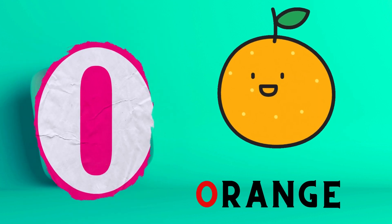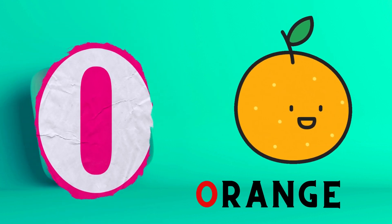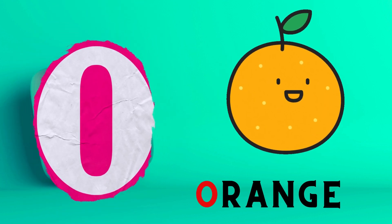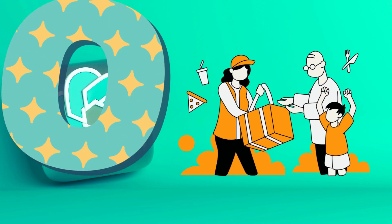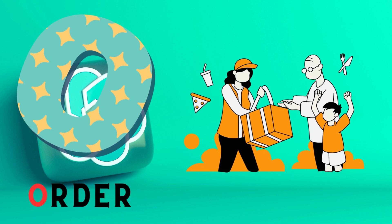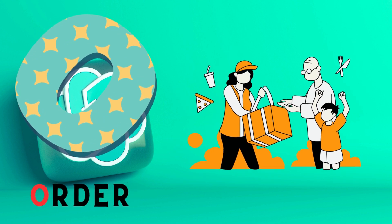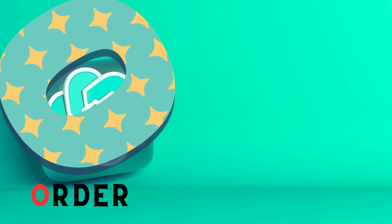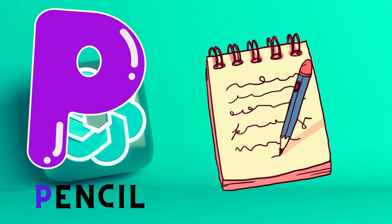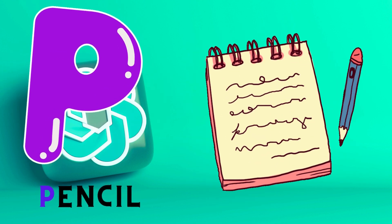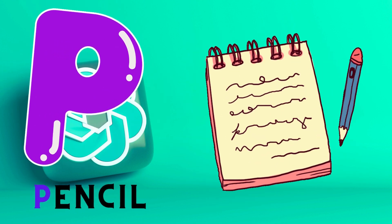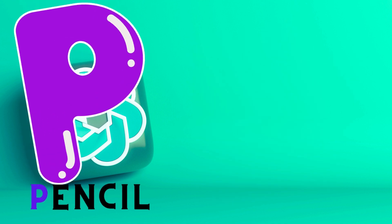O is for Orange. O, O, Orange. O is for Otter. O, O, Otter. P is for Pencil. P, P, Pencil.